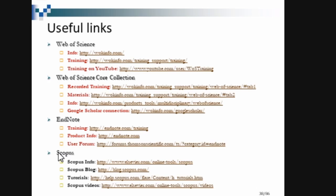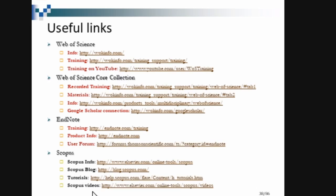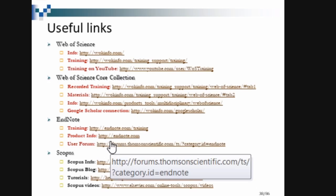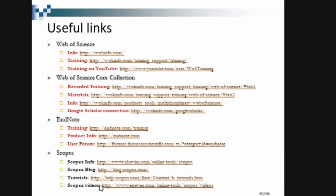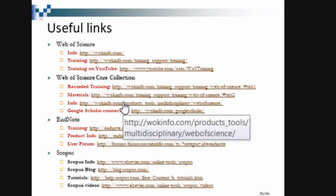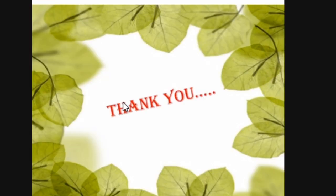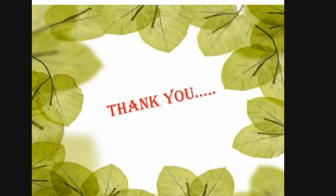So this is all about the Scopus database. These are some useful links — please take note. There are official training resources on how to use Web of Science, how to use Scopus, and how to use EndNote, which is a reference management system. EndNote is not free — it is similar to Mendeley and Zotero, but it is not free. Please go through these training materials and tutorials for further clarification. Thank you.